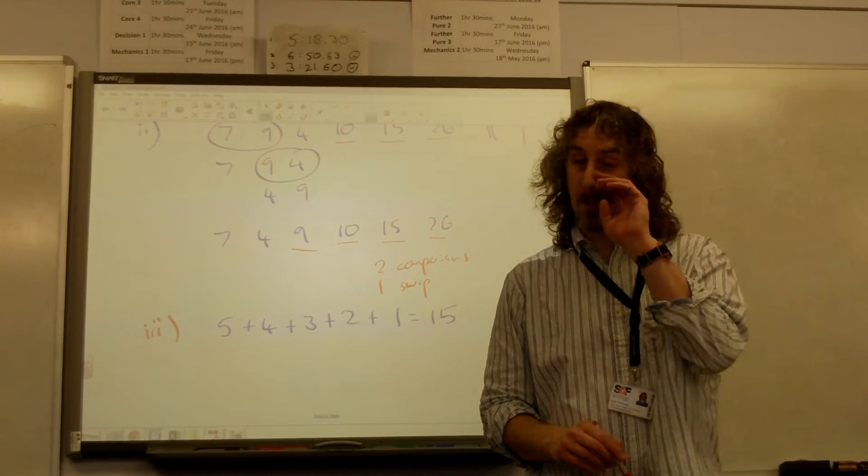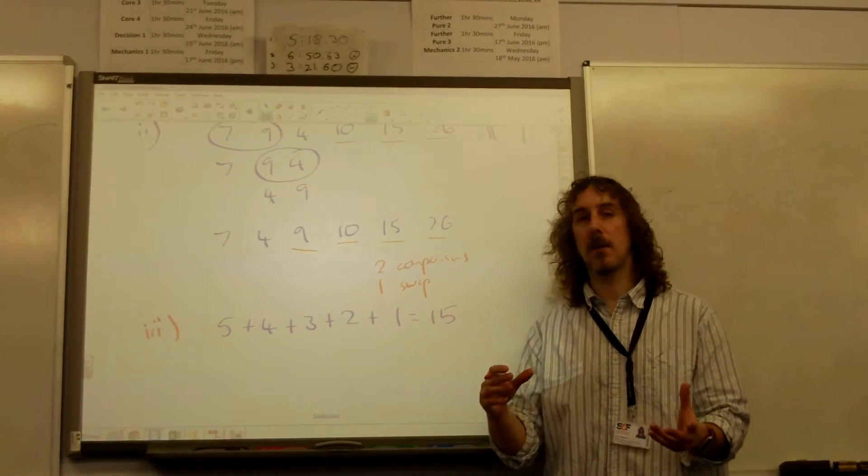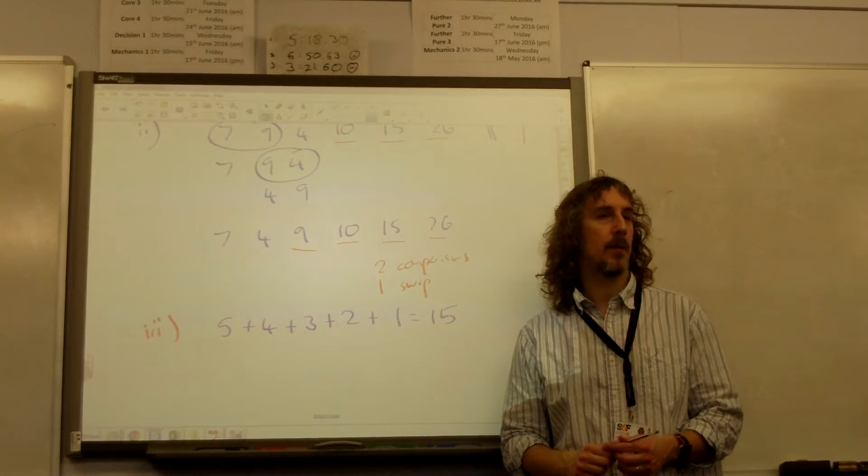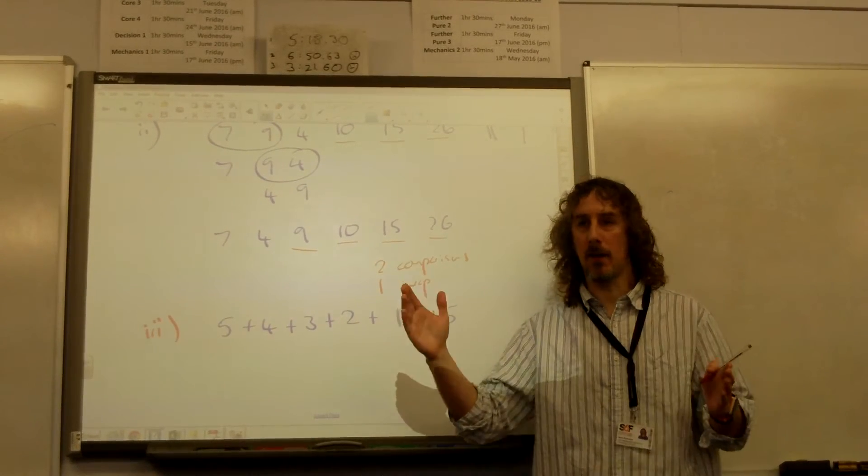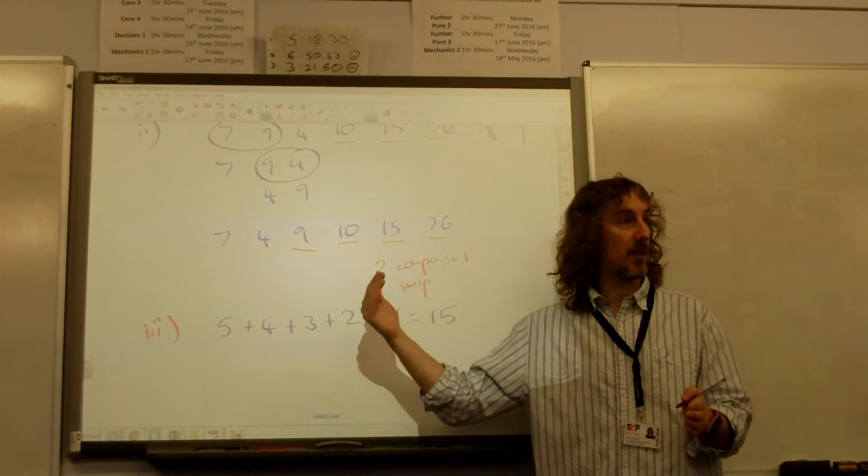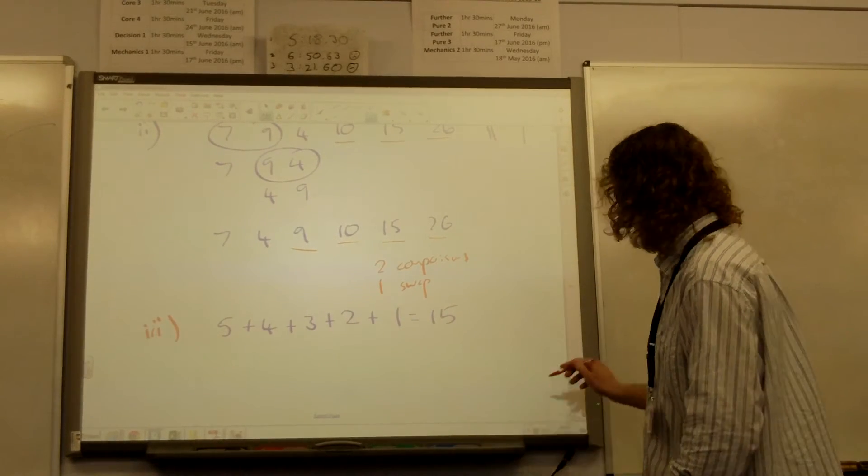The bubble sort is pretty consistent with that because the only way you would get less than that kind of pattern, that number, is if you had a whole pass early that resulted in no swaps. And we've just seen that that didn't happen with this list, so it's a full complement.